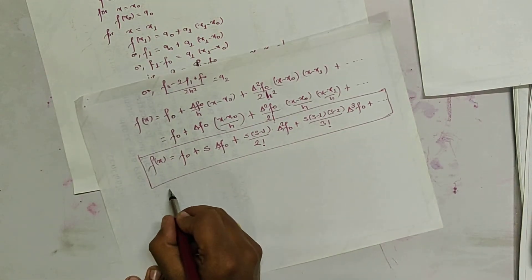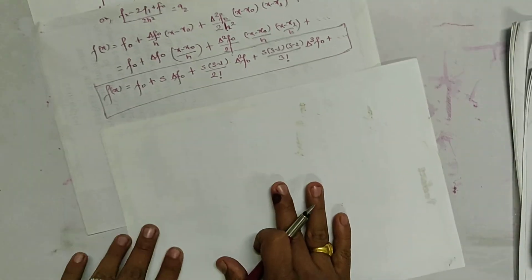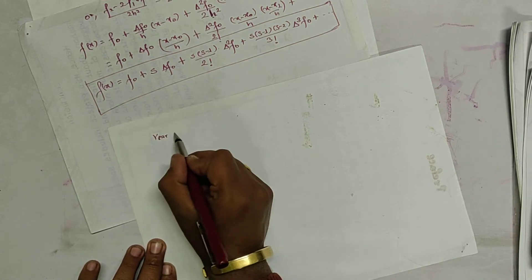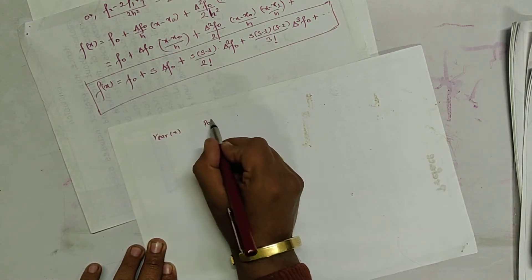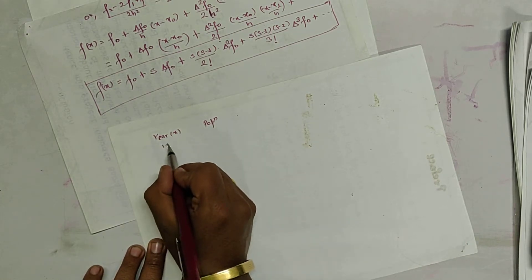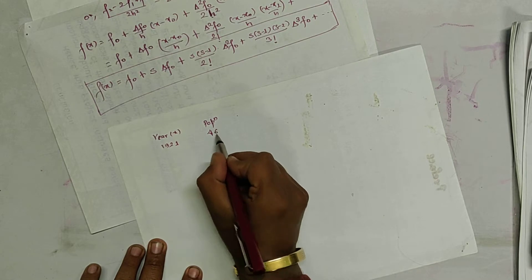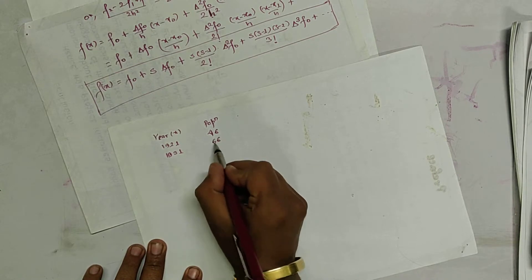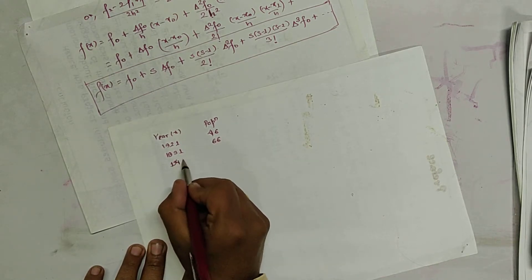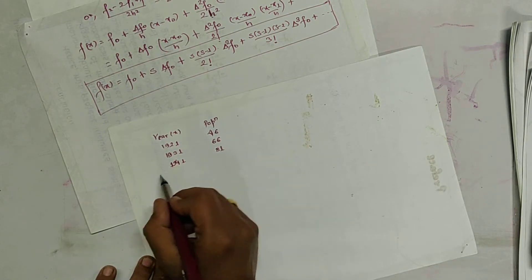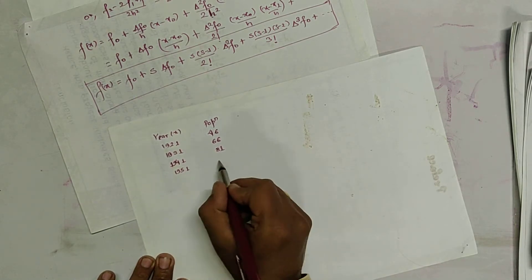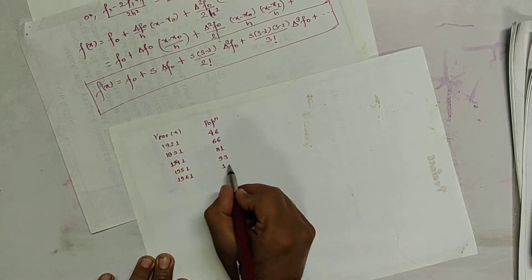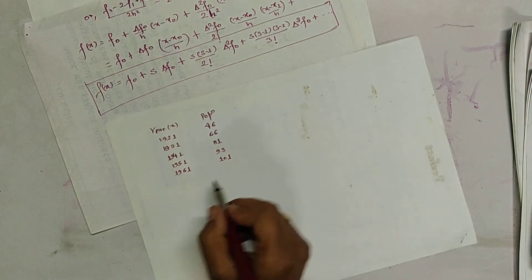Let us consider an example. The population data (in thousands) is given as: x = 1921, f = 46; x = 1931, f = 66; x = 1941, f = 81; x = 1951, f = 93; x = 1961, f = 101. We form the difference table with columns: x_i, f_i, delta f_i, delta² f_i, delta³ f_i, and delta⁴ f_i.